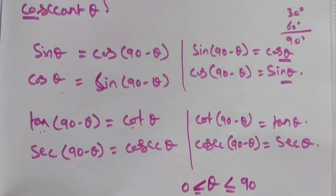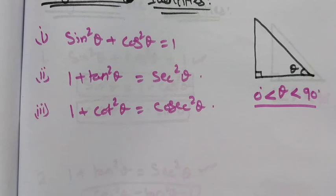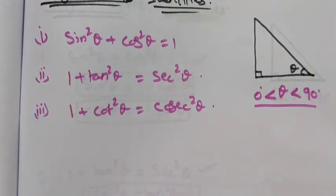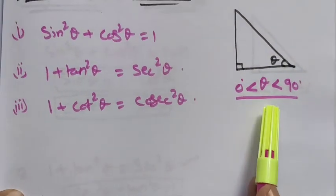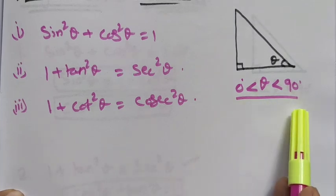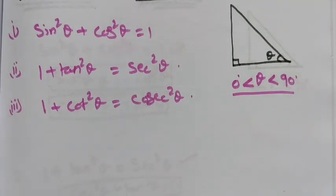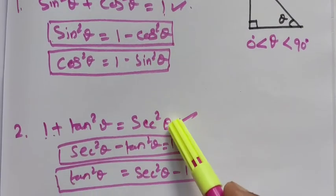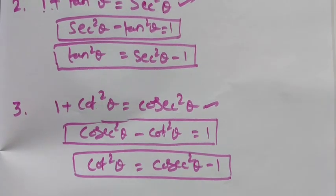Finally, the trigonometric identities: sin square theta plus cos square theta equals 1, 1 plus tan square theta equals secant square theta, and 1 plus cot square theta equals cosecant square theta. These are satisfied for theta greater than 0 and less than 90 degrees. We have rewritten them in different formats. Thank you, students.